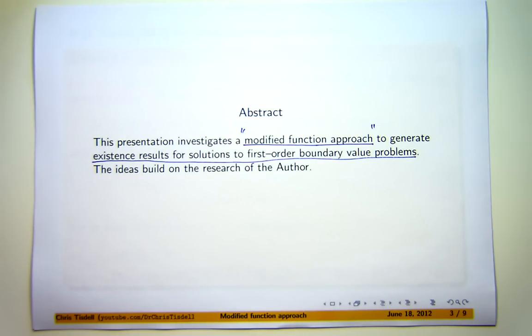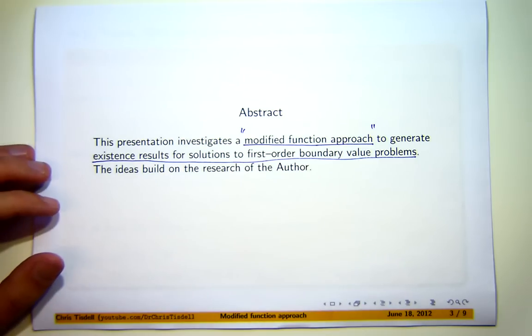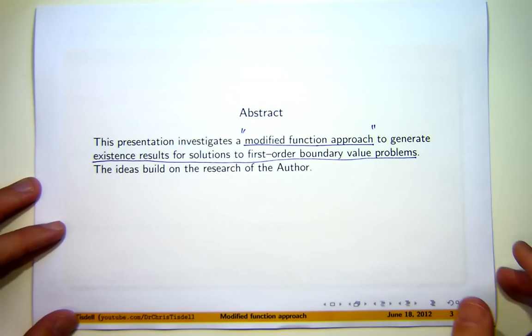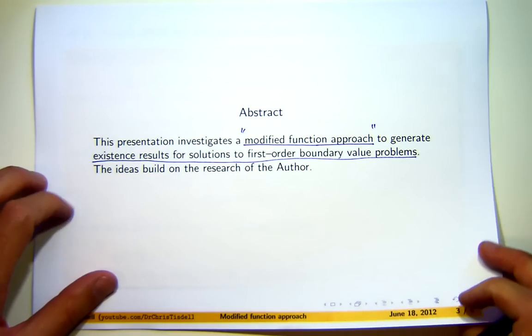And I'm going to apply this approach to generate existence results for solutions to certain boundary value problems. In particular, those boundary value problems are going to be first order, two point. And the ideas answer a question on when does a boundary value problem have at least one solution. And like I said before, the ideas build on some of my own research from 2006.